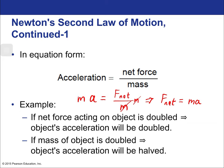F = ma is along with E = mc² one of the most famous laws in physics. If the net force acting on an object is doubled, the acceleration doubles. If the mass is doubled, the acceleration is halved. Newton's second law combines both the direct and inverse proportionalities into one law. It uses an equals sign rather than a proportionality symbol because the units match up on both sides.